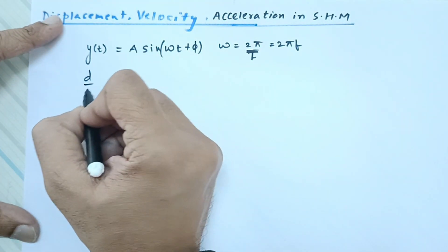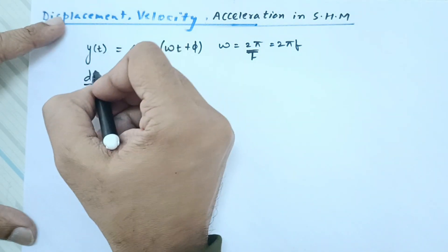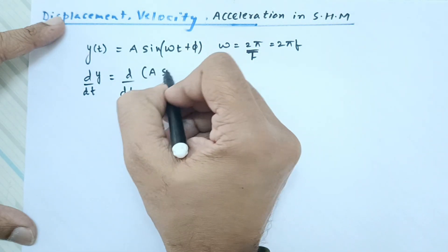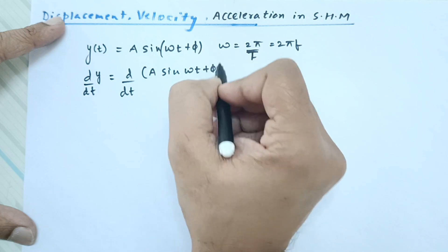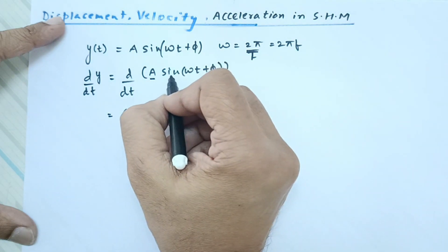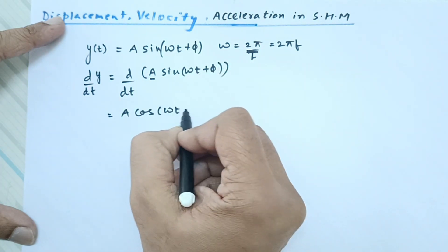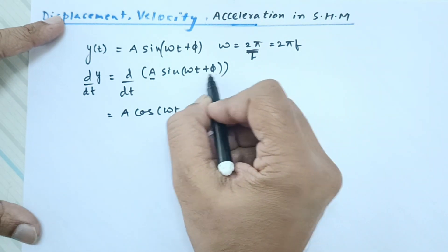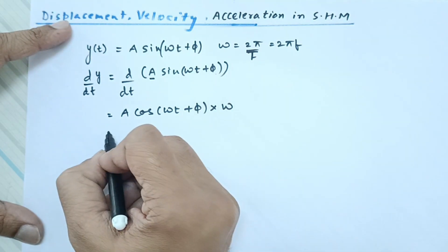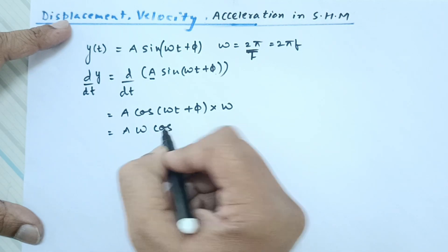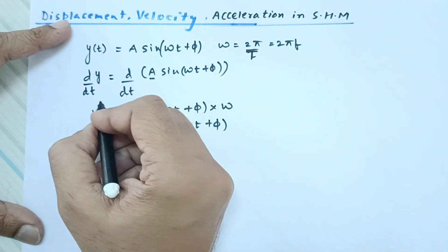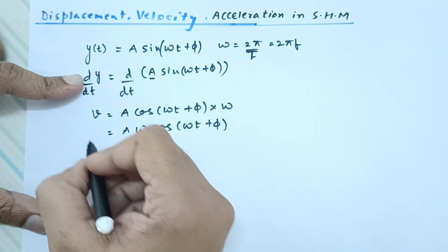If I differentiate the displacement equation one time with respect to time, I get d/dt of a·sin(ωt + φ). Since 'a' is constant, it comes out. The differentiation of the sin function gives cos(ωt + φ), and applying the chain rule, the differentiation of (ωt + φ) with respect to time is just ω. So the velocity is a·ω·cos(ωt + φ), because velocity is the first-time derivative of displacement.